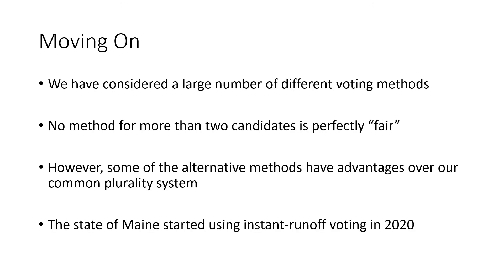We've considered a large number of different voting methods and seen that none is perfectly fair — they all have some flaws. But many alternative methods have advantages over the common plurality system, specifically allowing voters to express preferences and influence the final result even without voting for a major party candidate. In fact, the state of Maine has started using instant runoff voting for the 2020 elections, so progress is being made.